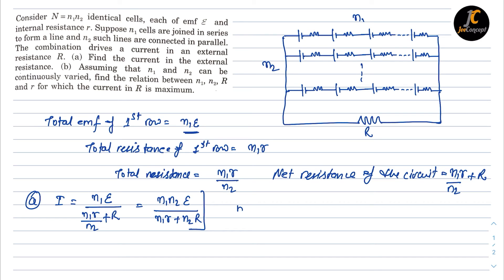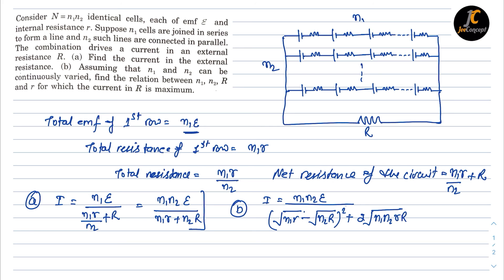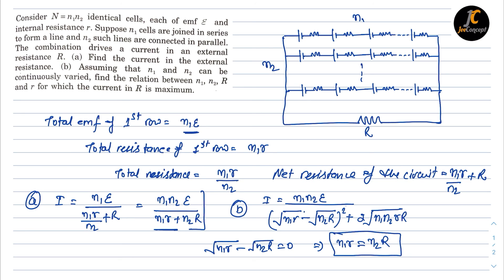For the second part, we have to maximize this current, so the denominator must be minimized. We can rewrite the denominator as (√(n1·r) − √(n2·R))² + 2√(n1·n2·r·R). To minimize this, the term (√(n1·r) − √(n2·R)) should equal zero, which gives the condition n1·r = n2·R. This is the condition for maximum current.